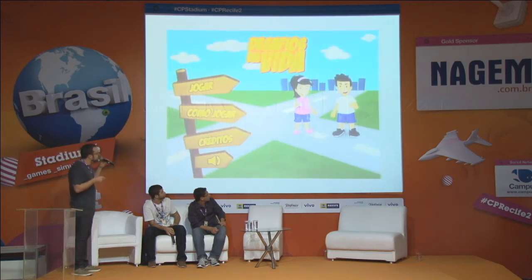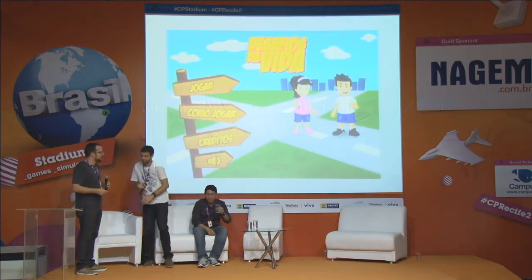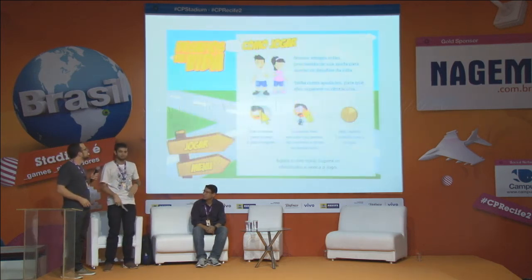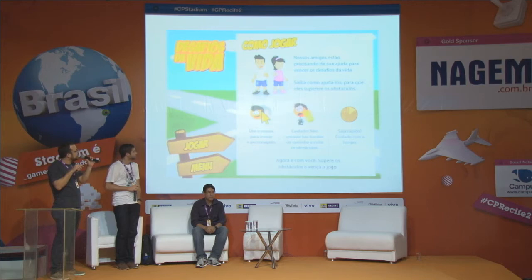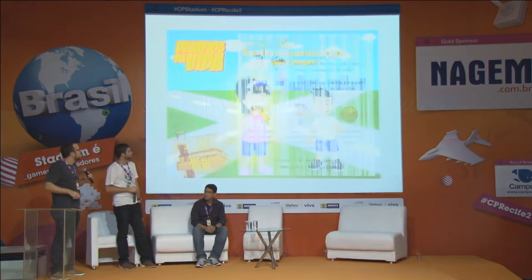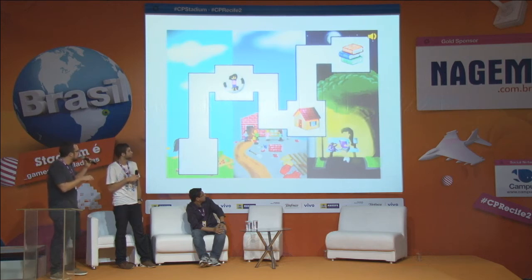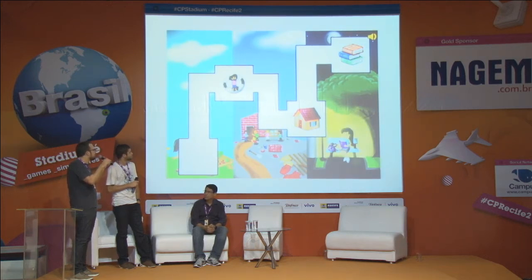O segundo jogo que a gente fez foi 'Desafios da Vida', que deu mais trabalho e mais discussão com a psicóloga e com a socióloga — foi difícil juntar todo o conteúdo e passar isso. Nesse jogo, a gente tinha um personagem menino e um personagem menina para ser escolhido no começo do jogo. As histórias deles eram similares: três fases baseadas em três eixos que são afetados pelo crack. O primeiro é o de saúde, em que o personagem vai se transformar num jogador de futebol. O segundo era o eixo da família.